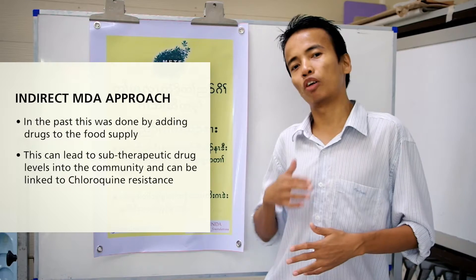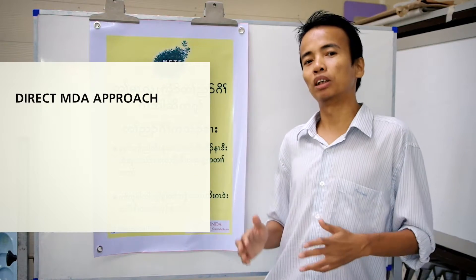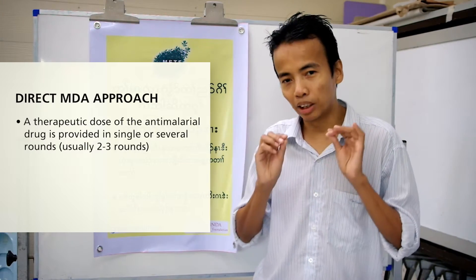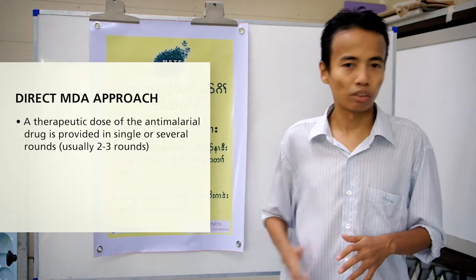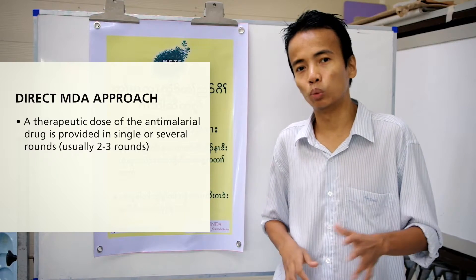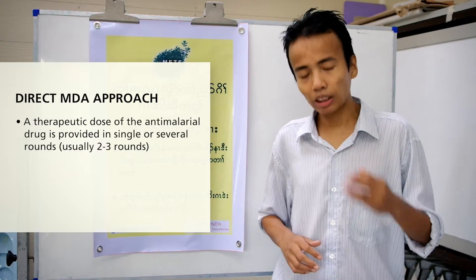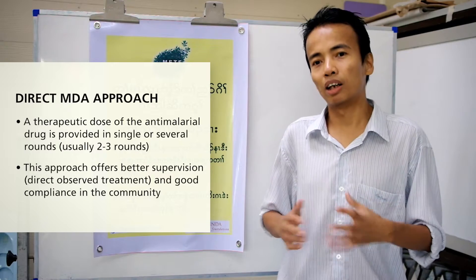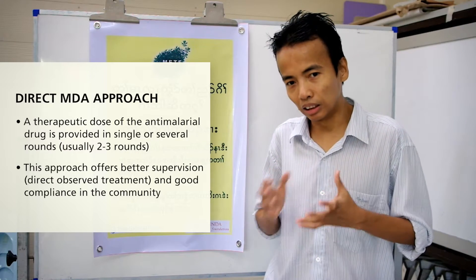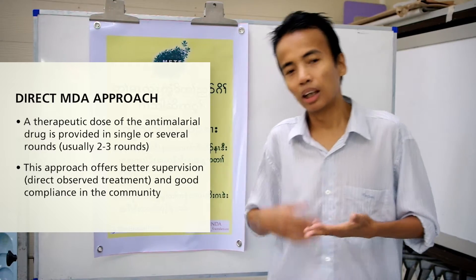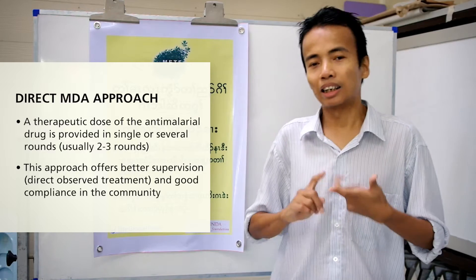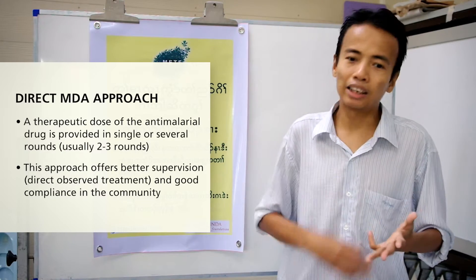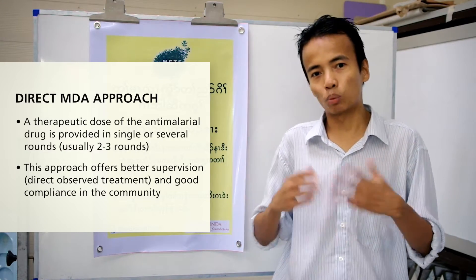Another approach of mass drug administration is the direct MDA or targeted mass drug treatment therapy, where we provide the therapeutic dose of the anti-malaria drug in single or several rounds. Usually we do it in two or three rounds. The use of targeted mass drug administration could offer us better supervision through direct observation treatment therapy and good compliance in the community. We could also monitor the adverse events of the drug in the community, as well as community awareness and community participation.